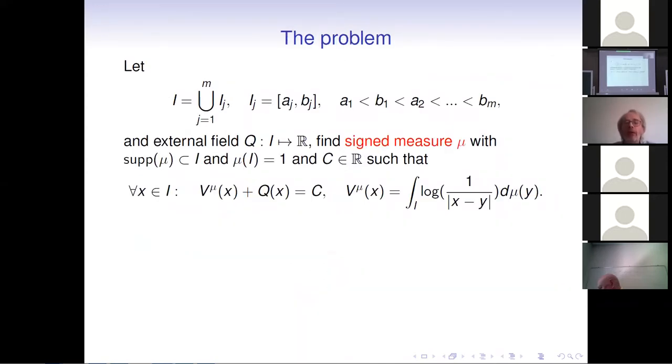So here's the problem which we would like to solve. We have a set I, which is a union of disjoint non-singleton compact real intervals, which we arrange from the left to the right. We have a function defined on I, which we call x to our field. We look for a signed measure mu, which is not necessarily positive, with total mass supported in I and total mass equal to one.